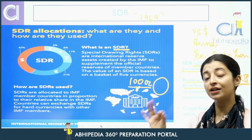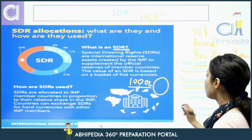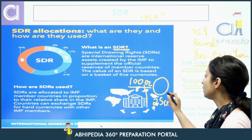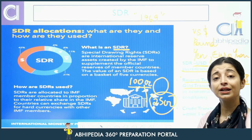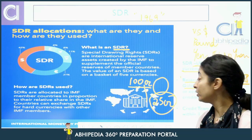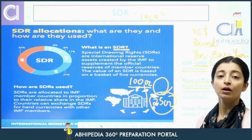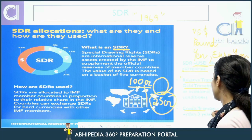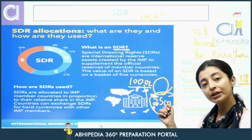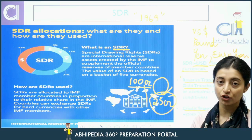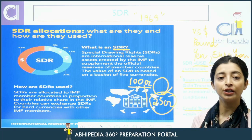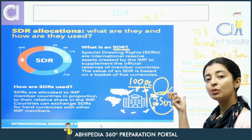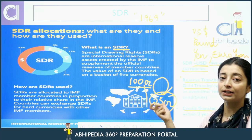Agar us country ki jo requirement hai woh RTP se zyada hai — suppose 100 crores mein se RTP mein 25 crores hai, par country ki requirement isse zyada hai — toh problem solve nahi hogi, toh woh credit tranche legi. Credit tranche mein kya hota hai? RTP mein koi condition nahi thi, lekin credit tranche mein conditions aa jaati hain — jaise ki teen saal ke baad usko return karna padega. RTP mein koi extra fees nahi hai aur economic reform ki condition nahi hai.